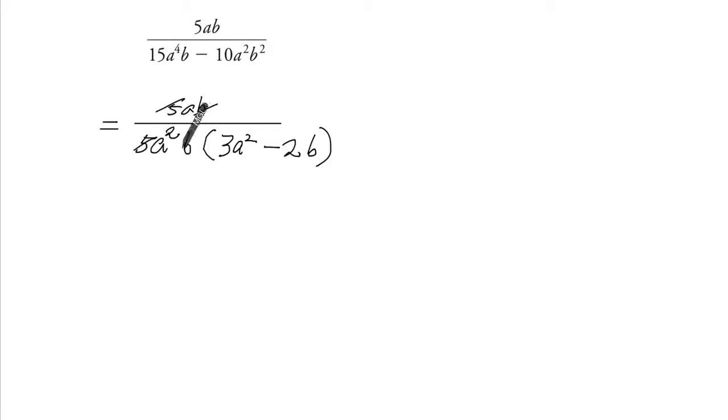So 5 gets reduced, B gets reduced. We have A over. A squared is A times A. It's reduced again. And we're done.